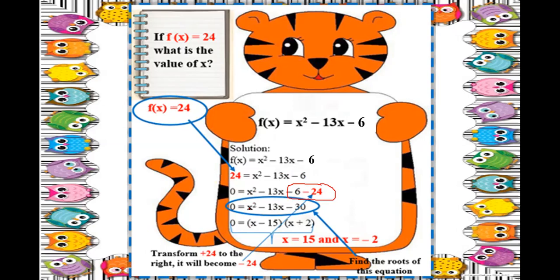Now factor the quadratic expression x squared minus 13x minus 30. We need factors of negative 30 whose sum is negative 13. The pairs are: 1 & -30, -1 & 30, 2 & -15, -2 & 15, 3 & -10, -3 & 10, 5 & -6, -5 & 6. Looking at the middle term of negative 13, we need positive 2 and negative 15 — different signs, subtract: 15 minus 2 is 13, and since 15 is larger, it is negative 13. So the factors are x plus 2 and x minus 15.